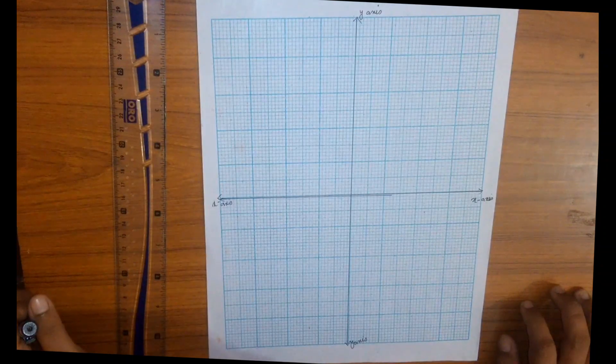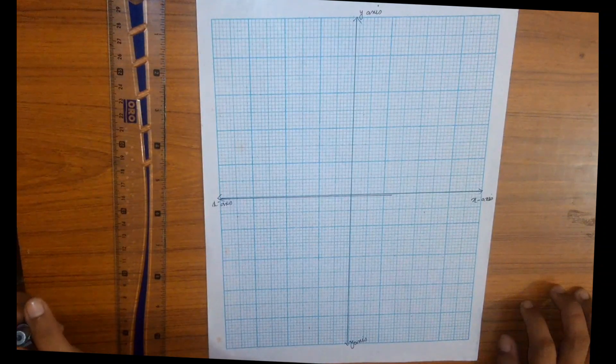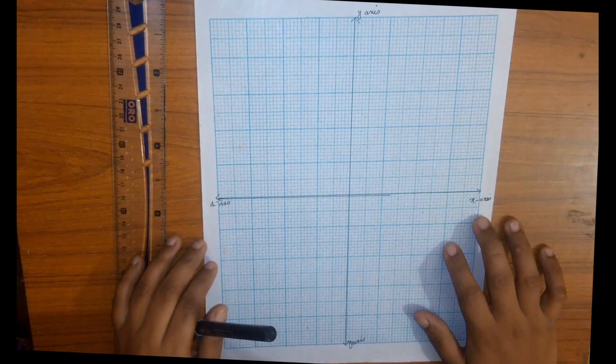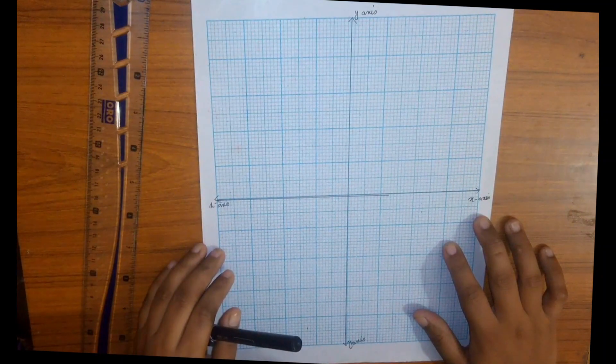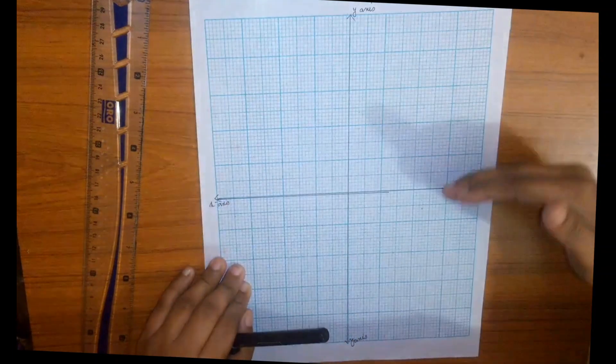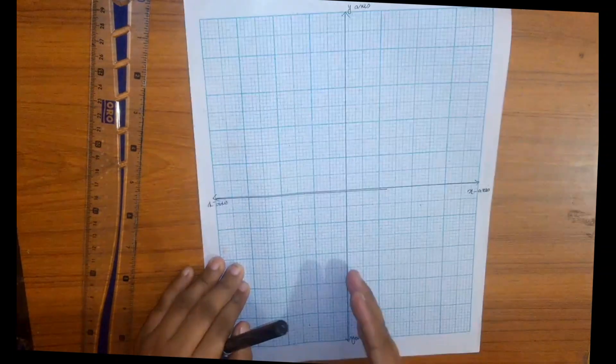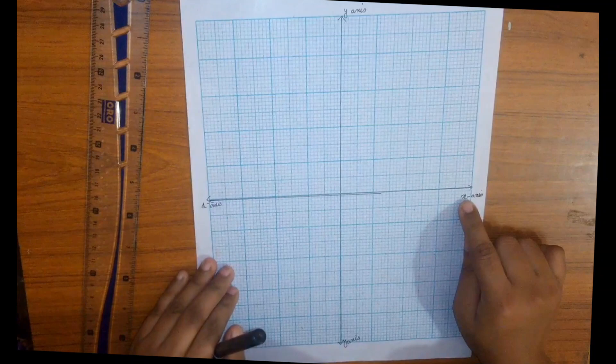Hello everyone, in this video we are going to learn how to construct a component bar chart on graph paper. For two-dimensional graphical representation we have two axes, one horizontal and one vertical. On the horizontal axis we have positive and negative values, and on the vertical axis we also have some positive and some negative values.